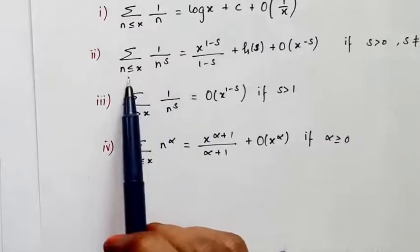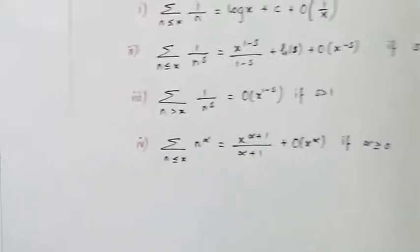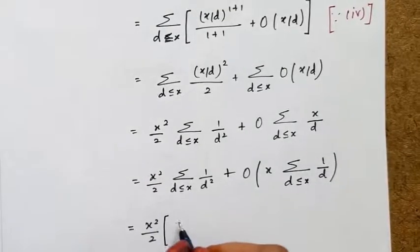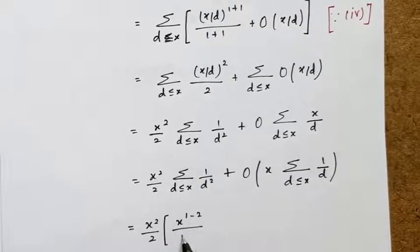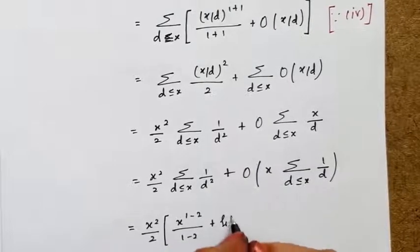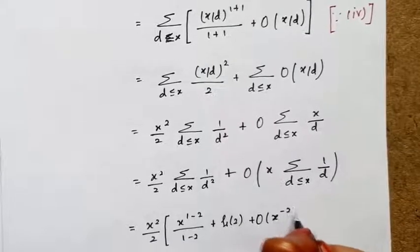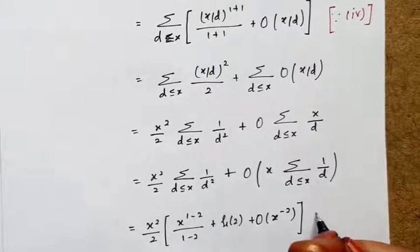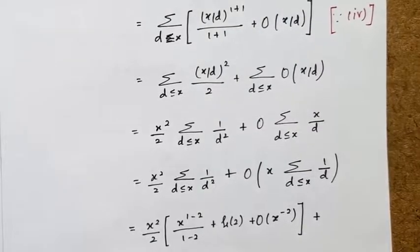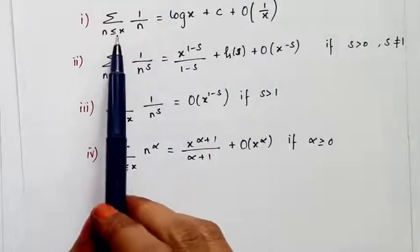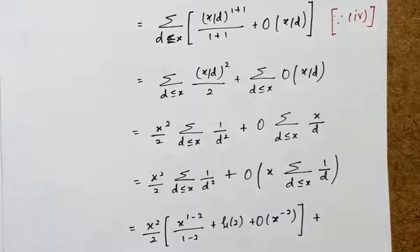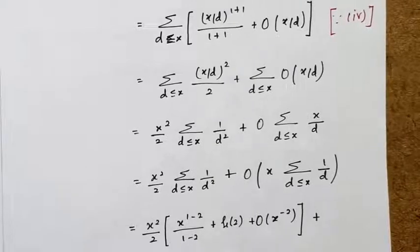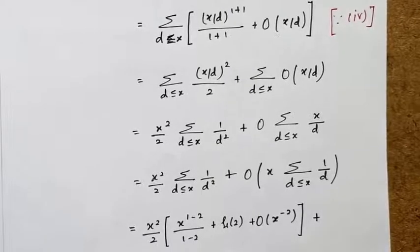For sum over d ≤ x of 1/d², I use the second formula with s = 2: this gives x^(1−2)/(1−2) + g(2) + O(x^(−2)), i.e., −x^(−1) + g(2) + O(x^(−2)). For sum over d ≤ x of 1/d, I use the first formula to get: log x + C + O(1/x).